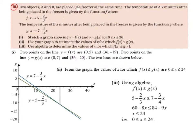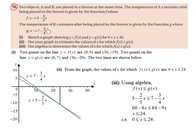Two objects, A and B, are placed in a freezer at the same time. The temperature of A, x minutes after being placed in the freezer, is given by the function f, where f of x maps to 5 minus 2 over 3x. The temperature of B, x minutes after being placed in the freezer, is given by the function g, where g of x maps to 7 minus 3 over 4x. Part 1: sketch a graph showing y equals f of x and y equals g of x, for x values greater or equal to 0 but less than or equal to 36.